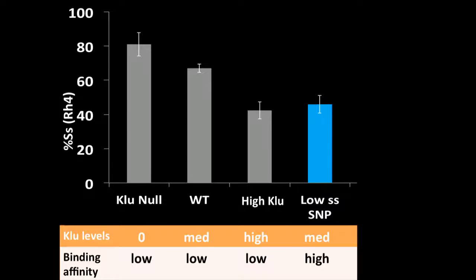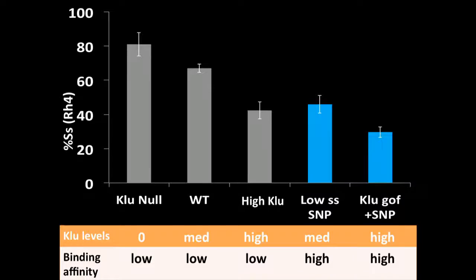In a low spineless SNP situation, we're back to medium levels of clue but now high binding affinity. So we see a similar level of spineless on-off as the high clue. Finally we did this experiment where we overexpressed clue in the presence of the SNP. So now we have high clue and high binding affinity, and this causes even further repression.